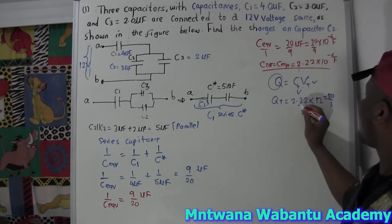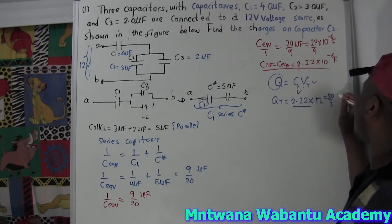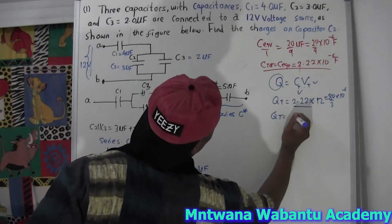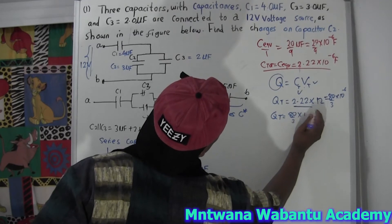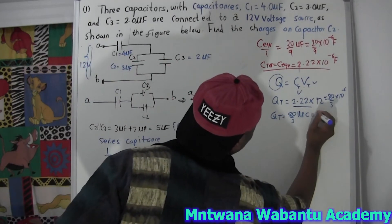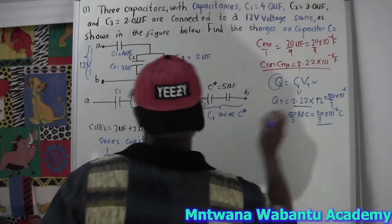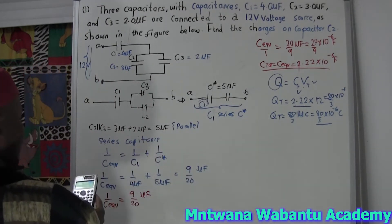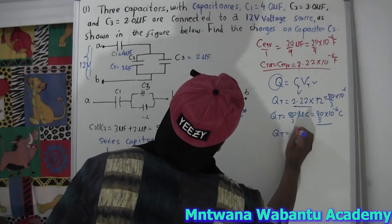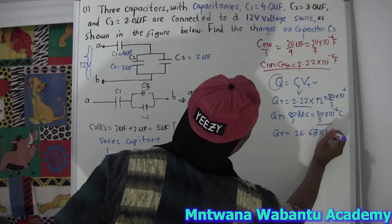Remember this is in microfarads, so the charge is in microcoulombs. If you want to convert to coulombs, multiply by 10^−6. Q_total = 8/3 microcoulombs ≈ 26.67 microcoulombs, which is the total charge passing from A to B.